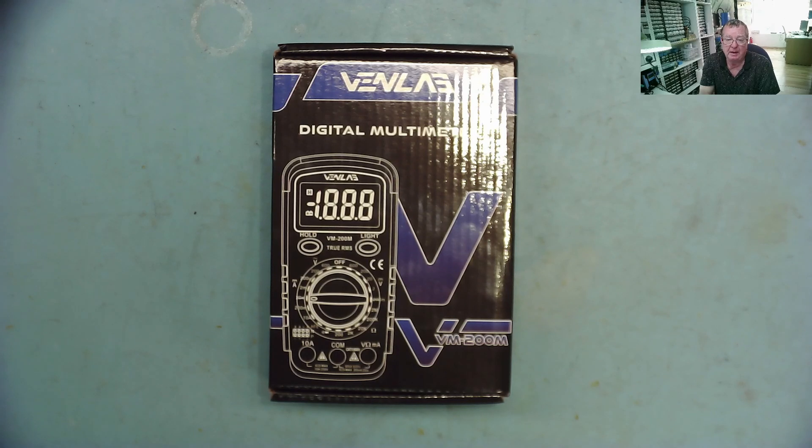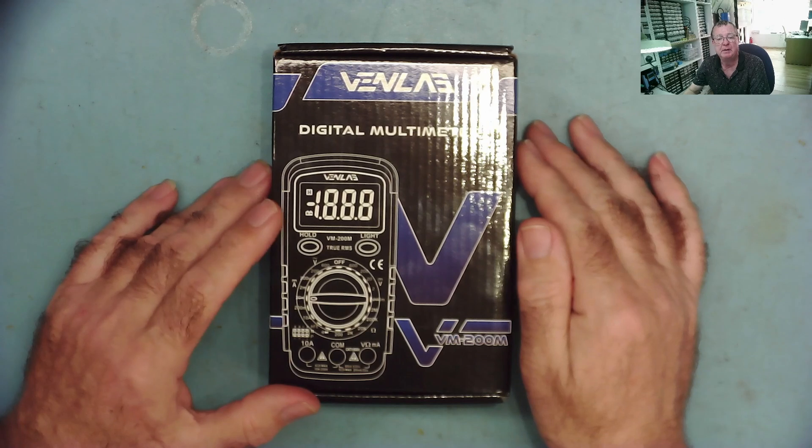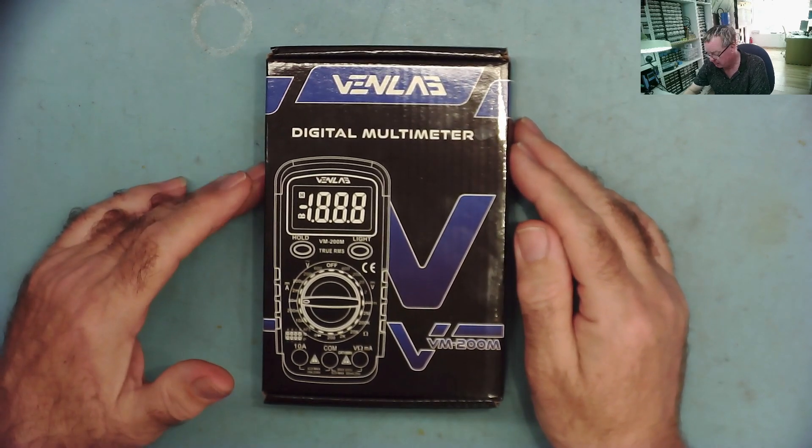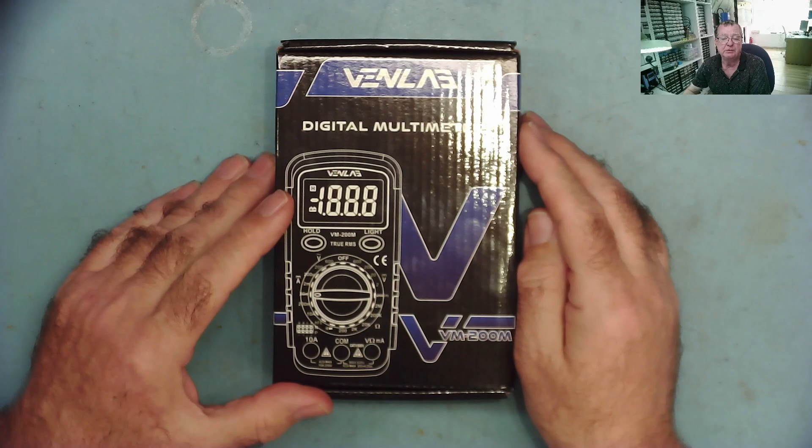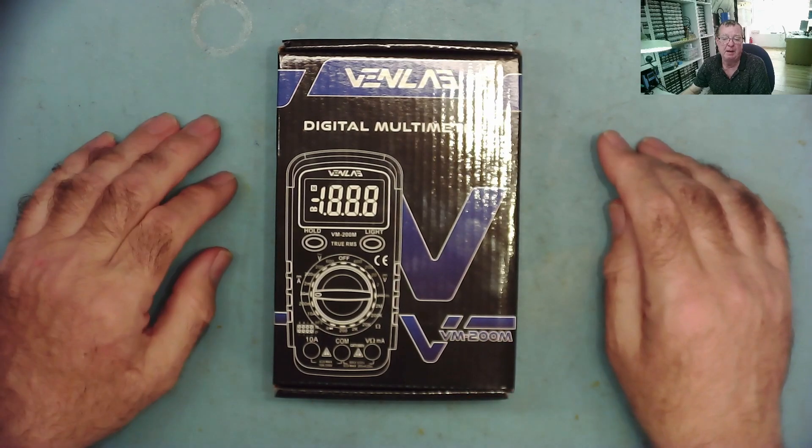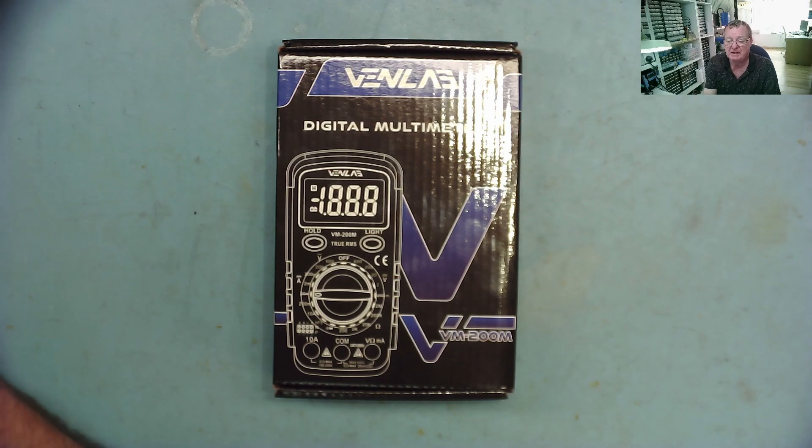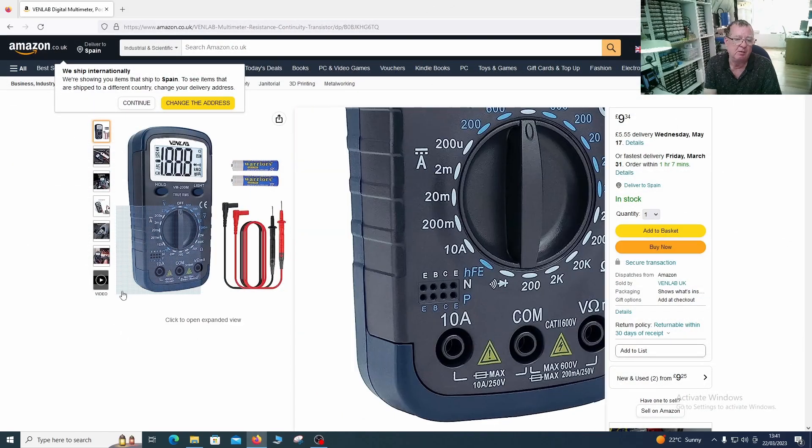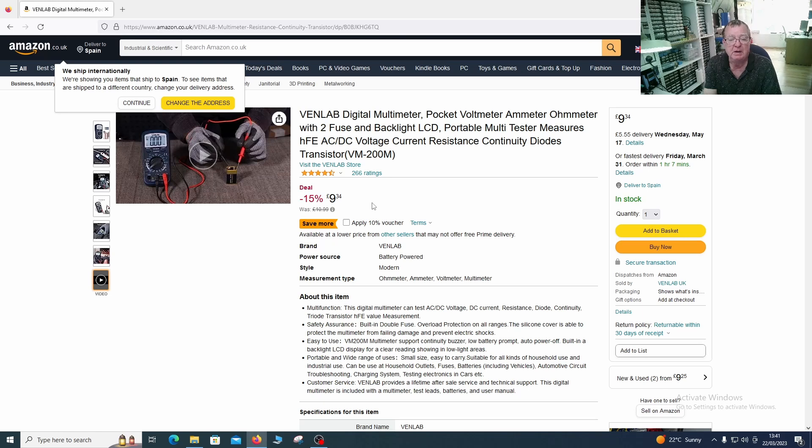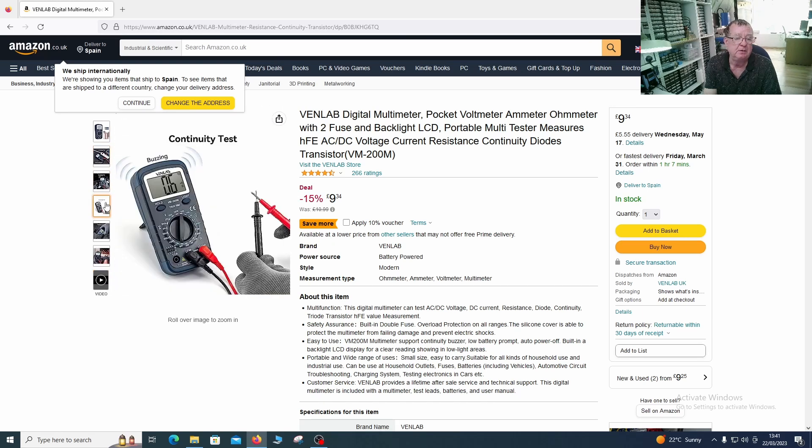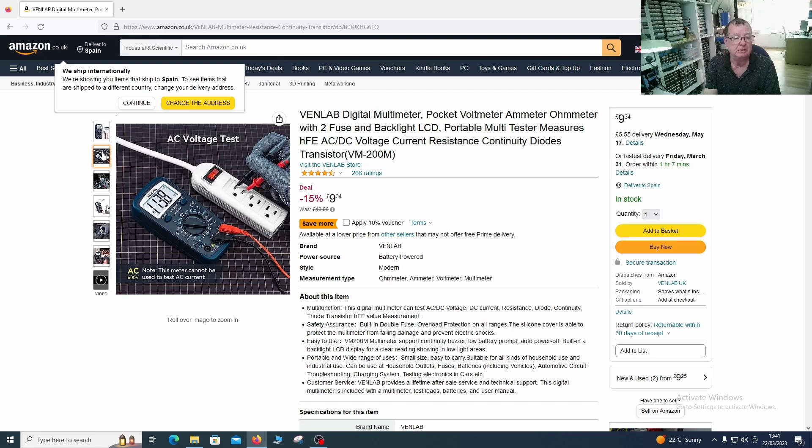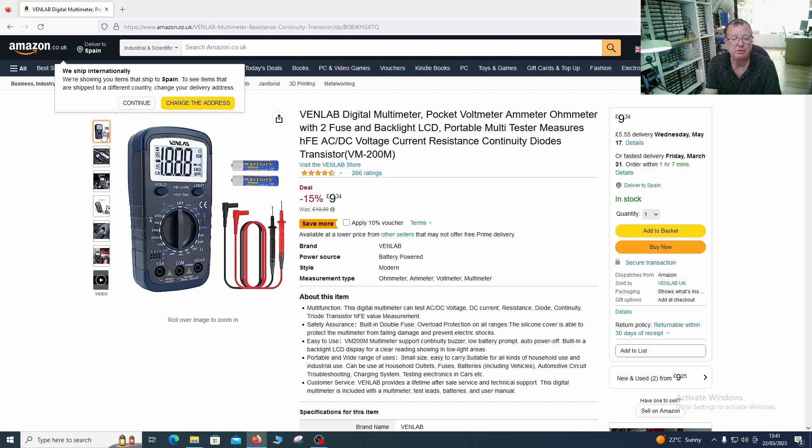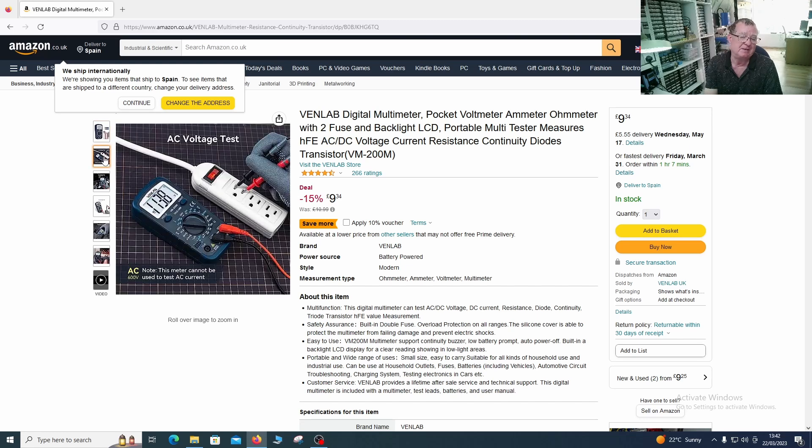I published that video and it was very popular. Shortly afterwards, a company called VenLab contacted me and said they'd seen the video. They asked if I'd like to try one of their cheap multimeters and see what I think. So they sent me this one, the VM-200M. This is a very inexpensive multimeter. If we take a quick look online, it's available on Amazon for less than ten pounds.